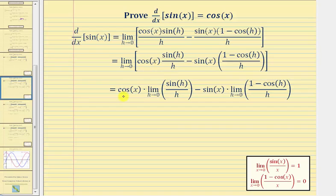Here, notice how we factored out cosine x, and we're left with the limit as h approaches zero of sine h divided by h. Then we have minus — we factored out sine x — so we have sine x times the limit as h approaches zero of one minus cosine h divided by h.